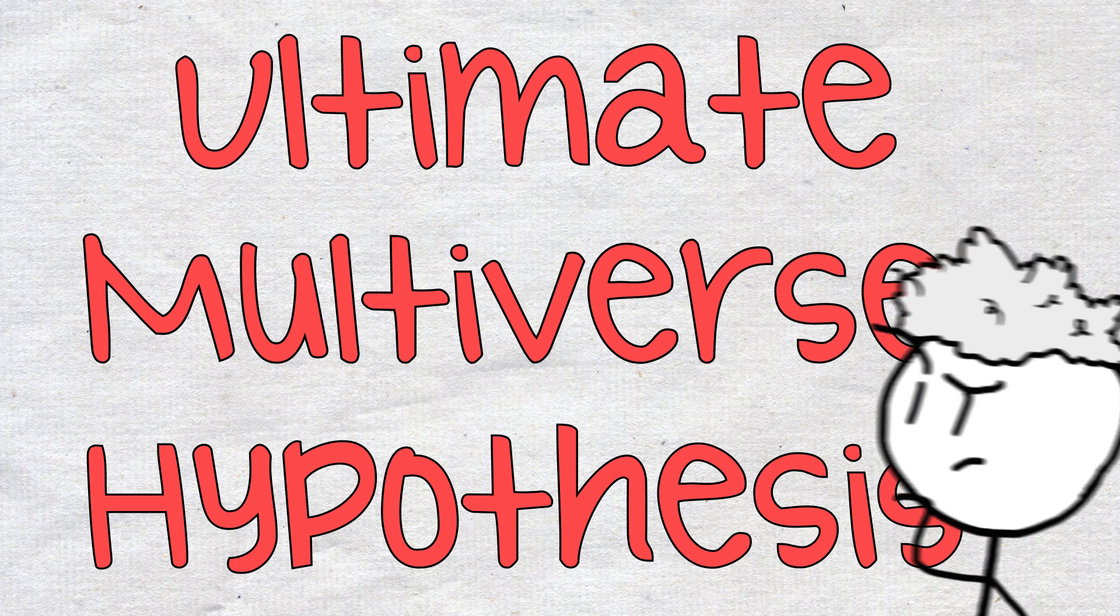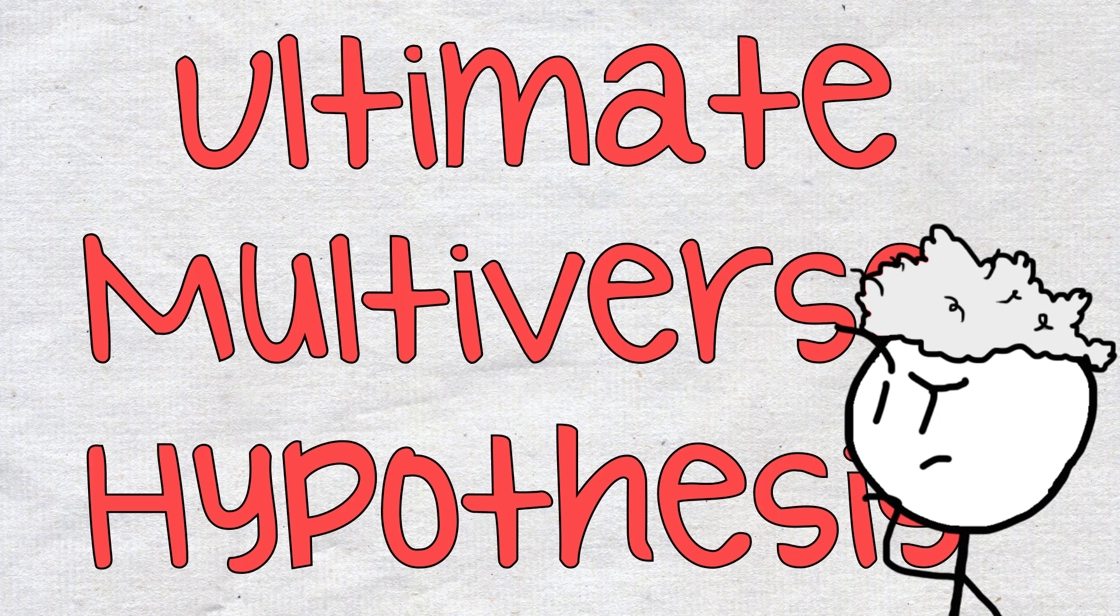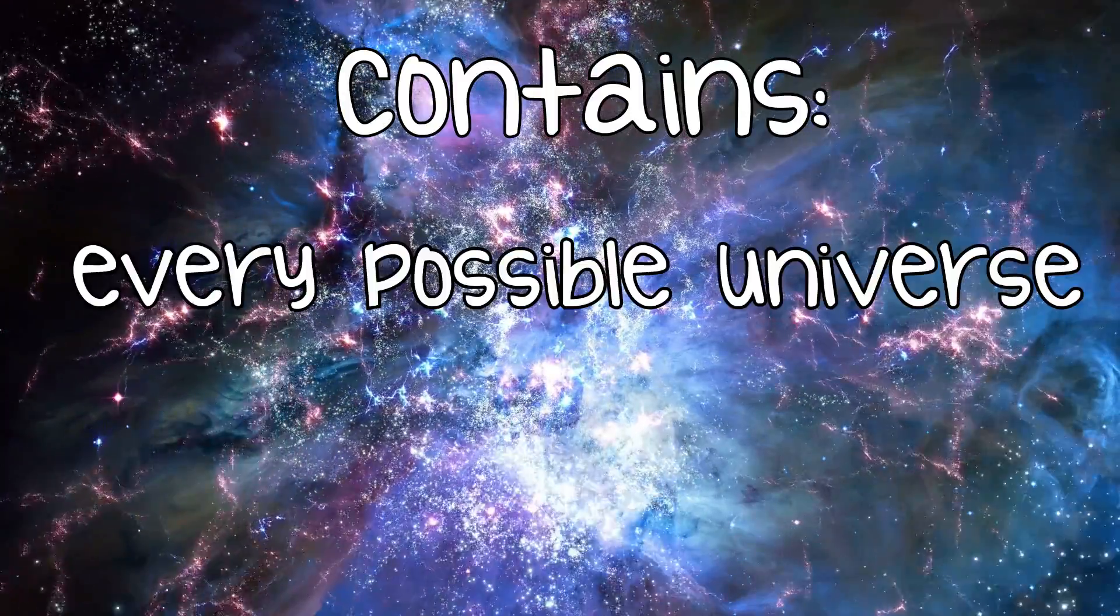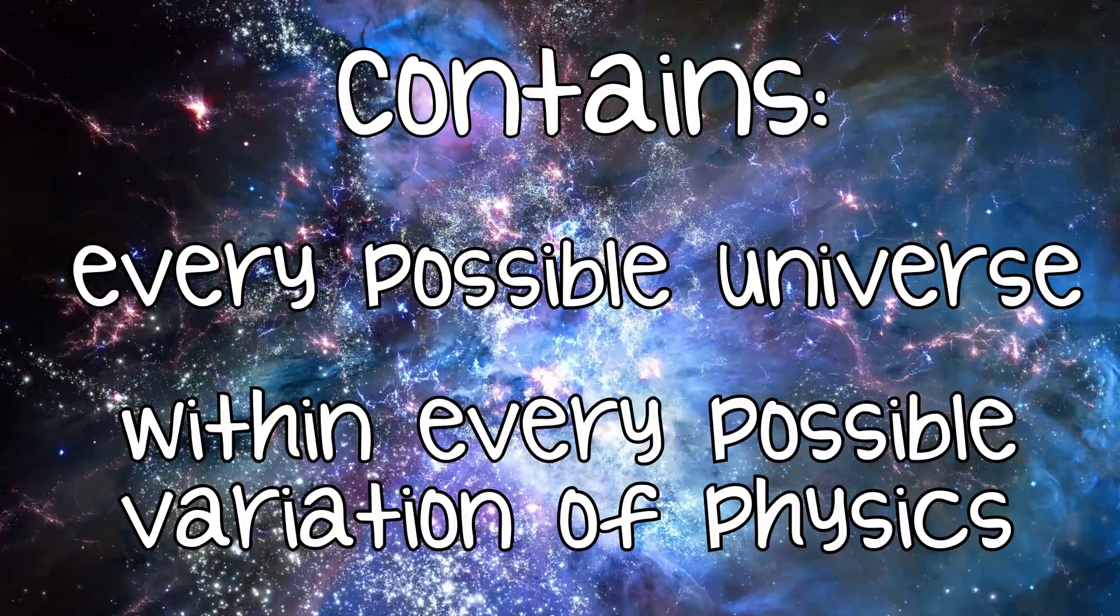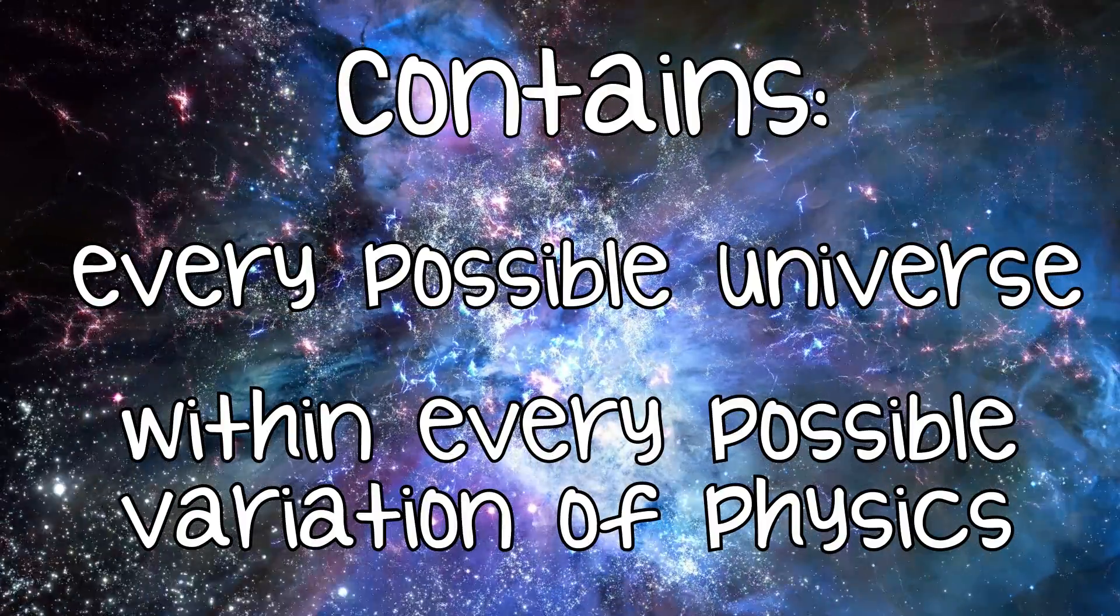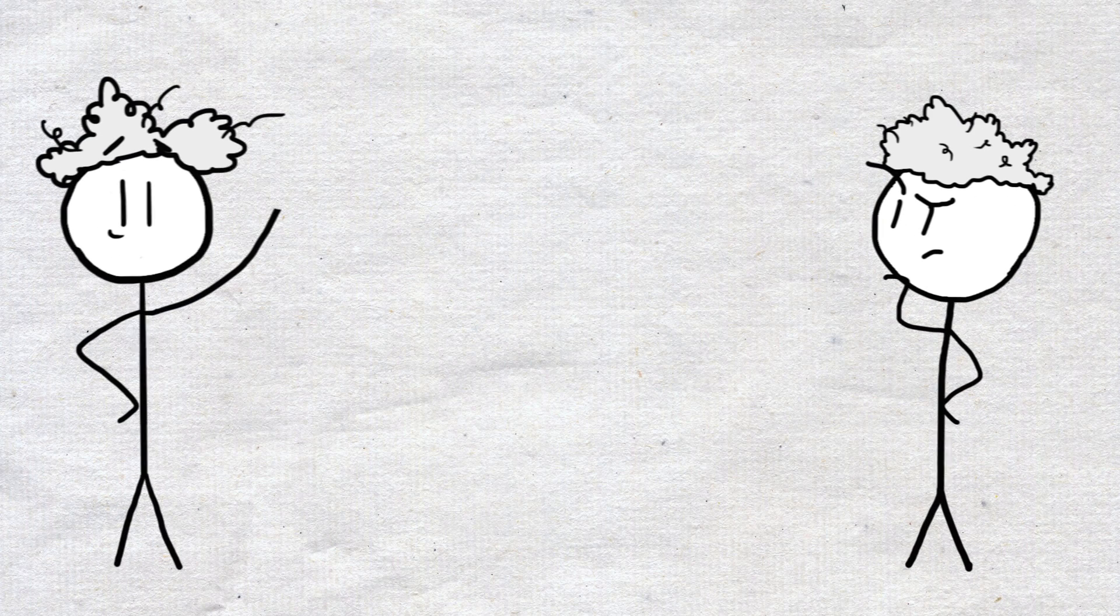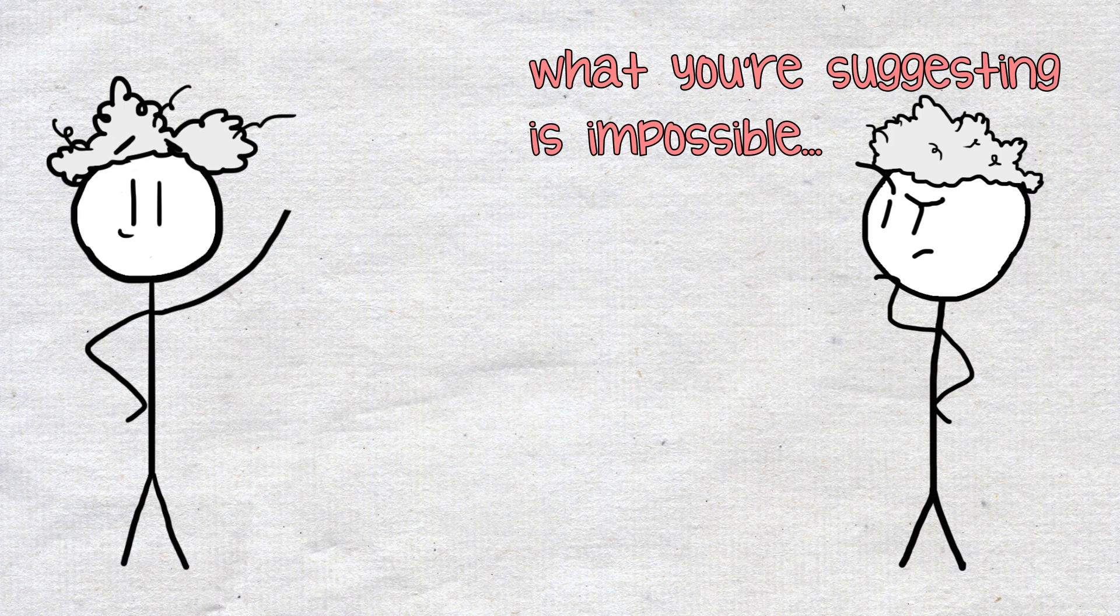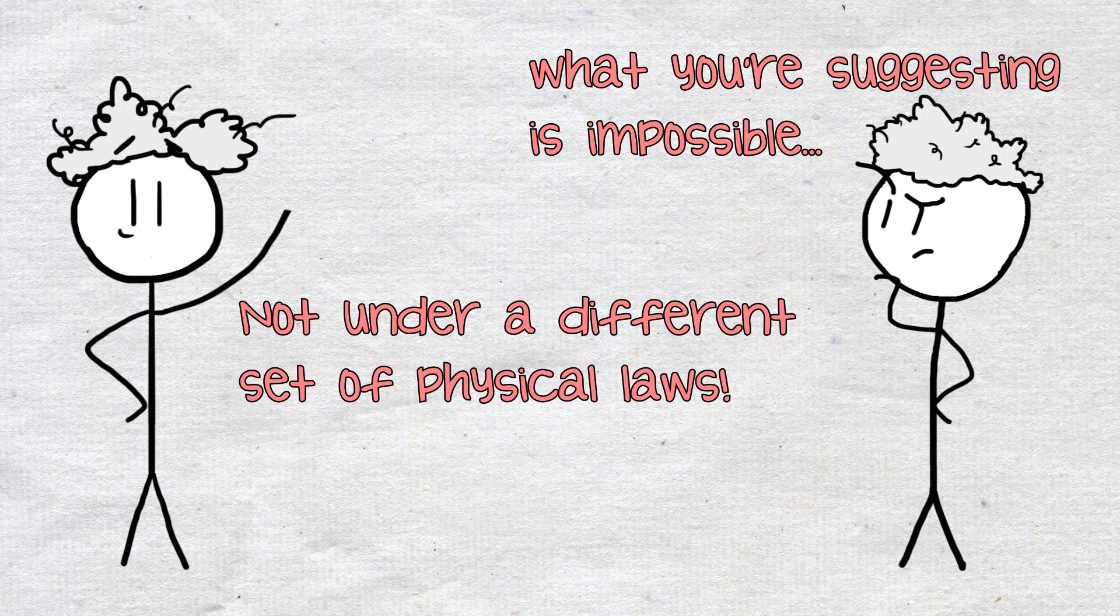Finally, there's the ultimate multiverse hypothesis. This one tends to draw a lot of criticism from the scientific community, perhaps rightfully so. The ultimate multiverse hypothesis suggests that it would contain every mathematically possible universe under different laws of physics. That last part is what gets it in trouble. Not only does it consider our laws of physics, the ones we assume to be universal, but it goes so far as to say all possible universes within all possible variants of physics. There's simply no way to test the hypothesis, which relegates it more to the realm of philosophy than hard science.